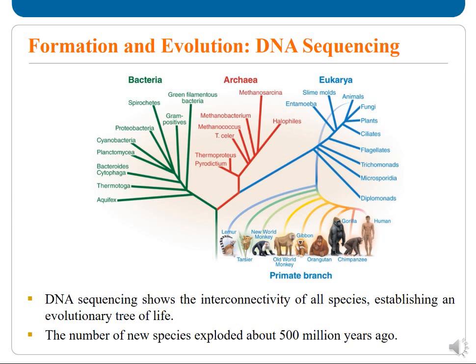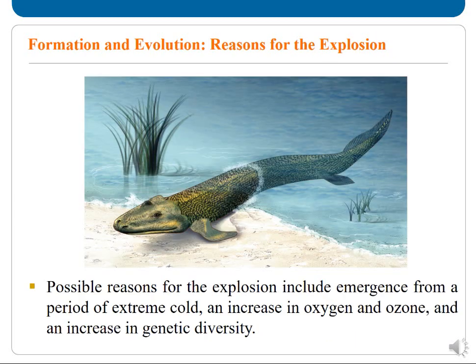The number of new species exploded about 500 million years ago. The possible reasons for this explosion include emergence from a period of extreme cold, an increase in oxygen and ozone, and an increase in genetic diversity.